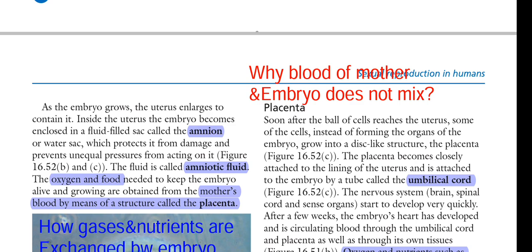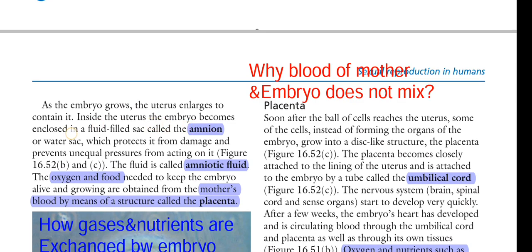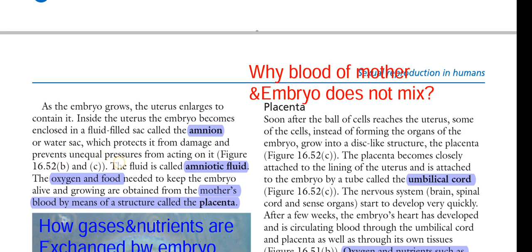There is enlargement of the embryo, and the amniotic cavity and amniocorionic membranes form. The amniotic cavity enlarges, the chorionic cavity disappears, and the whole uterine cavity disappears inside the uterus. The embryo becomes enclosed in a fluid-filled sac called the amnion or water sac, which protects it from damage and prevents unequal pressures. The fluid inside is called amniotic fluid, which acts as a cushion.